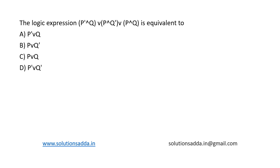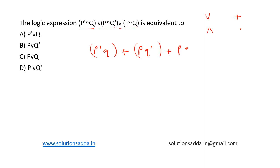This is a question from propositional logic. The logic expression p̄q + pq̄ + pq is equivalent to what? Here, or can be denoted as plus and and can be denoted using the dot operator. Rewriting this, we get p̄q + pq̄ + pq.